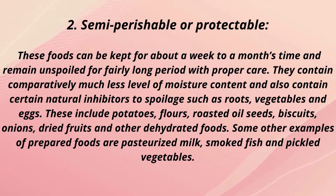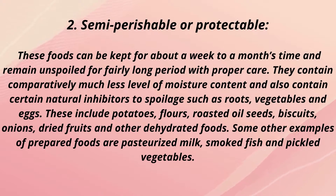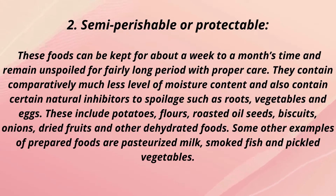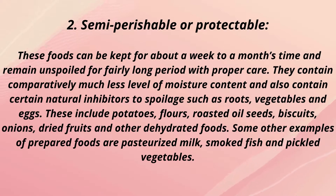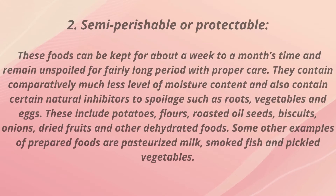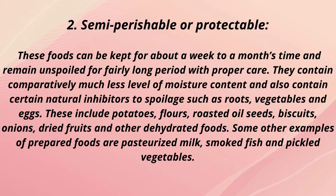Semi-perishable or protectable foods can be kept for about a week to a month and remain unspoiled for a fairly long period with proper care. They contain comparatively lower moisture content and contain natural inhibitors to spoilage. Examples include roots, vegetables, eggs, potatoes, flour, roasted oilseeds, biscuits, onions, dried fruits, and dehydrated foods. Some prepared food examples include pasteurized milk, smoked fish, and pickled vegetables.